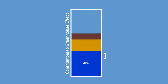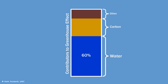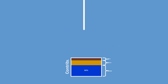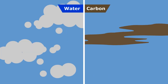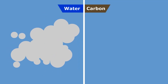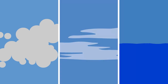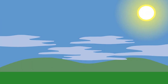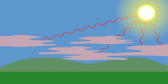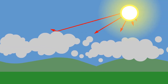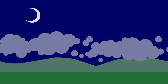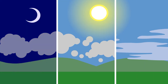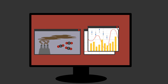Water is actually the dominant greenhouse gas, but its global effects are difficult to measure because it doesn't spread out evenly in the atmosphere like carbon does. Its effect on temperature also depends on the many forms it takes. When it takes the form of a haze, it has a warming effect. When it takes the form of clouds, it has a cooling effect — except for at night, in which it has a subtle warming effect. Since atmospheric water is hard to model, it tends to get ignored.